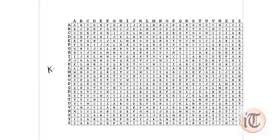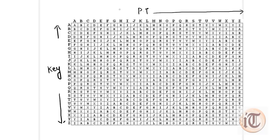On the left-hand side of the table, the rows represent your key, from A to Z. The top side represents the plain text. To construct the cipher text, we take the intersection of the row corresponding to the key and the column corresponding to the plain text.